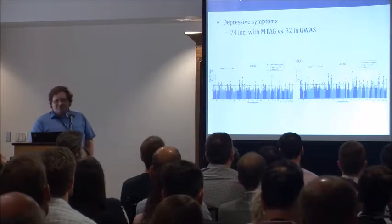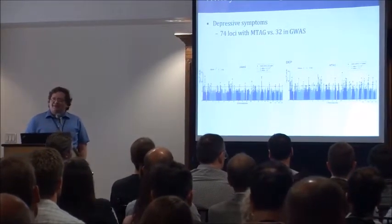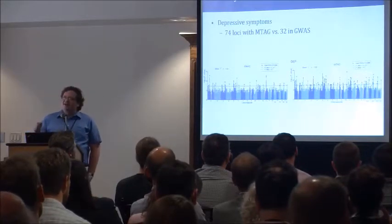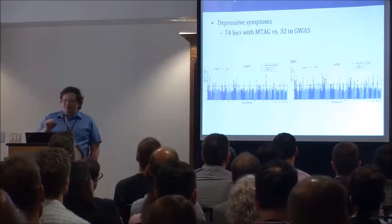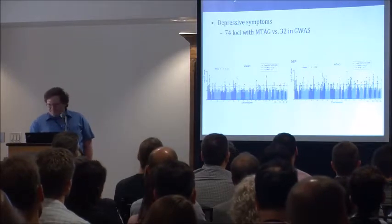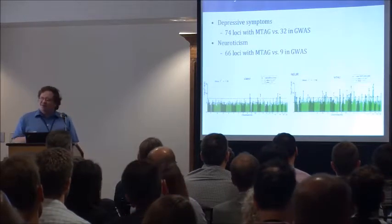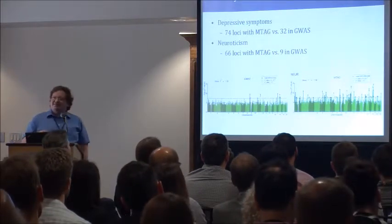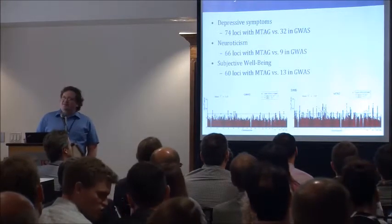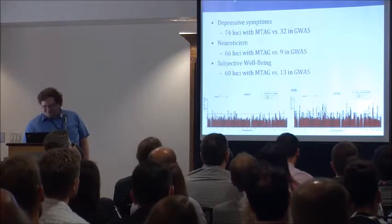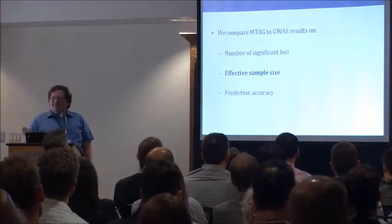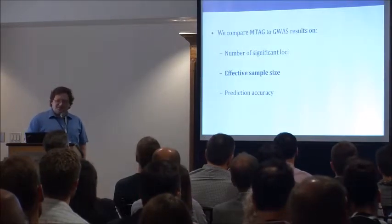As you might expect for a claimed improvement in power, we see a nice gain in terms of number of individual loci passing the significance threshold — close to double in depressive symptoms, comparing the Manhattan plot for the single-trait GWAS on the left versus MTAG pooling results across all three phenotypes on the right. We see even bigger gains for neuroticism, going from 9 GWAS loci to 66 after applying MTAG, and similarly for subjective well-being, going from 13 to 60 after applying MTAG.